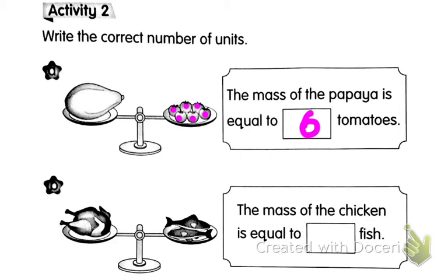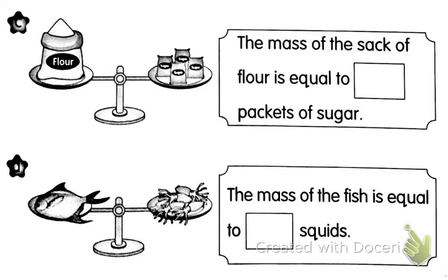The mass of the chicken is equal to one, two — two fish. Next, we compare flour with packets of sugar. The mass of the sack of flour is equal to how many packets of sugar? Let's count: one, two, three, four — four packets of sugar.